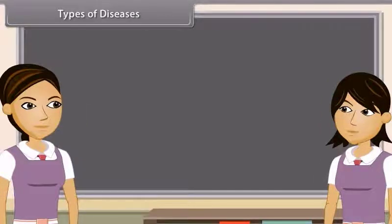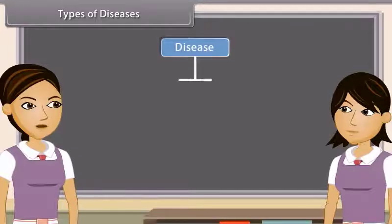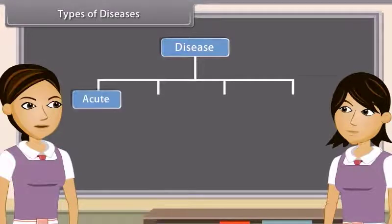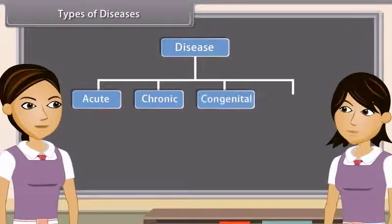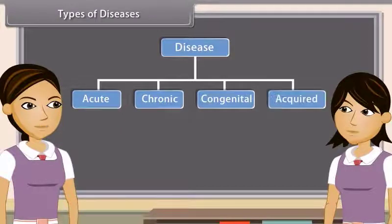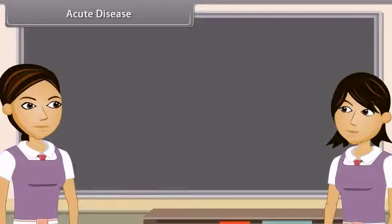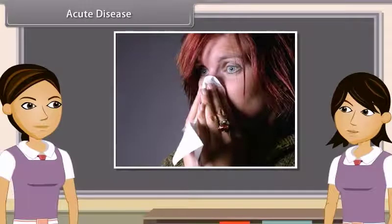Can you tell me how many types of diseases are there? Yes, human diseases are grouped into four categories: acute, chronic, congenital and acquired. Acute diseases are those diseases whose effects come on suddenly and affect the body quickly. For example, influenza.